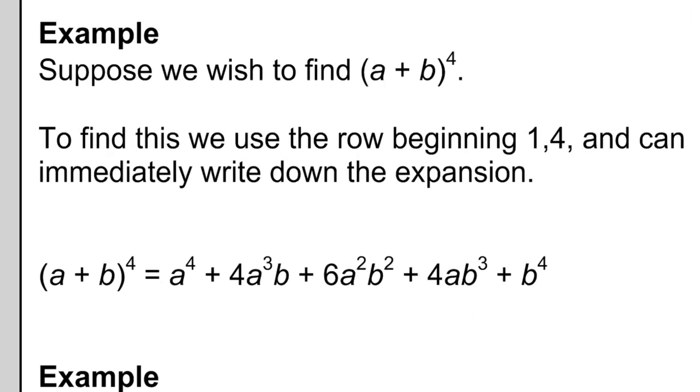Just to hammer down this point, suppose we wanted to find a plus b to the exponent 4. We find the row in Pascal's triangle that begins with 1, 4, which is the 5th row, and we can write down the coefficients as 1, 4, 6, 4, 1. The a variable goes from the exponent 4 all the way to 0, and the b variable goes from the exponent 0 all the way to the exponent 4.